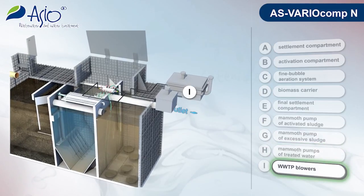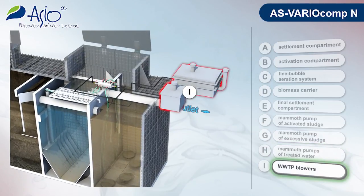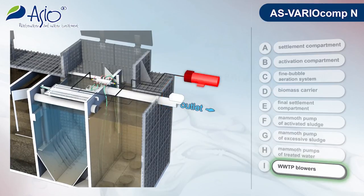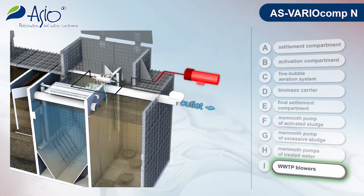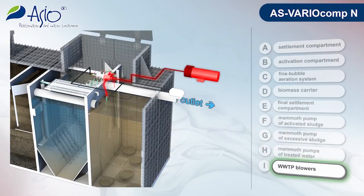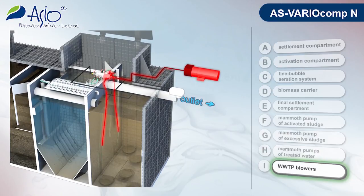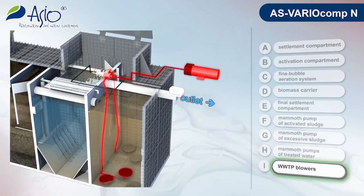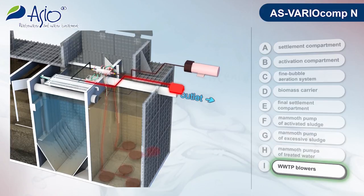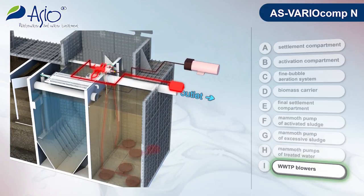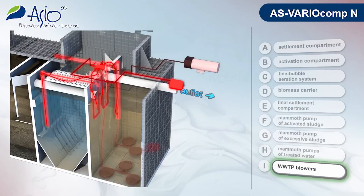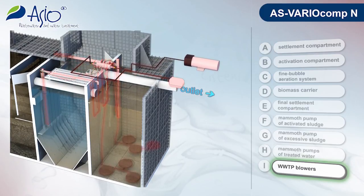Air is fed into the wastewater treatment plant using a pair of blowers. The first blower supplies air to the fine bubble aeration system in the activation part of the plant. The other blower is used to drive the mammoth pumps, making it possible to achieve the optimal setting of the plant.